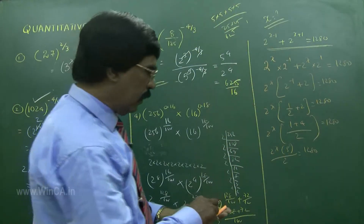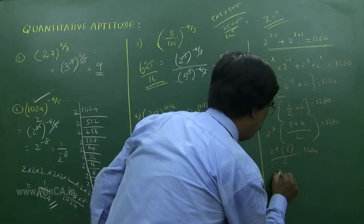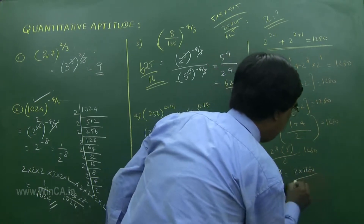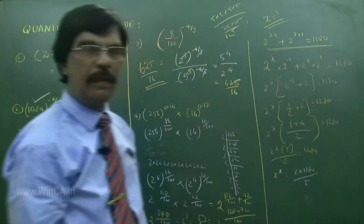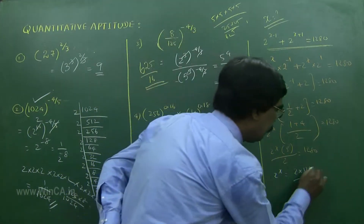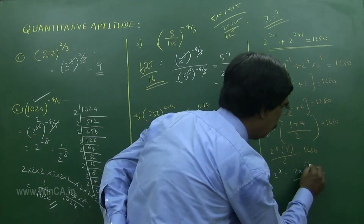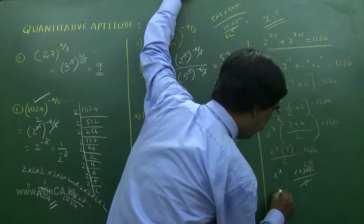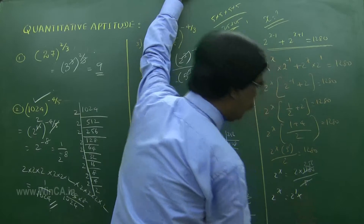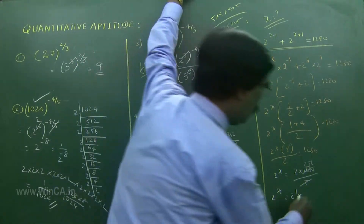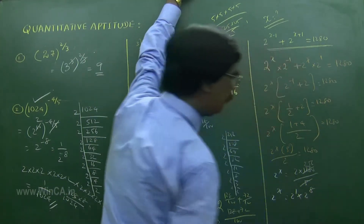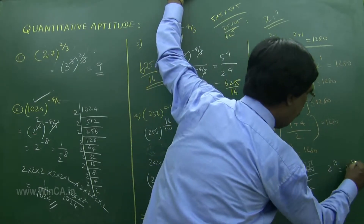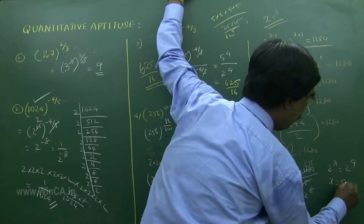Now 2 power X equals 2 into 1280 divided by 5. Cutting, 2 power X equals 512, which is 2 power 9. Equating the powers, X equals 9.